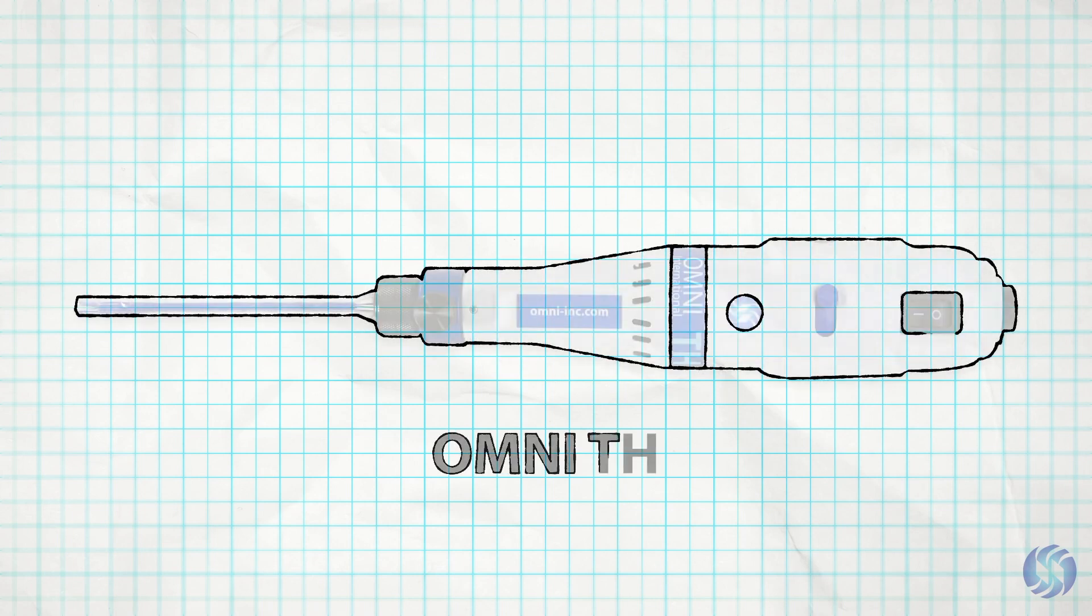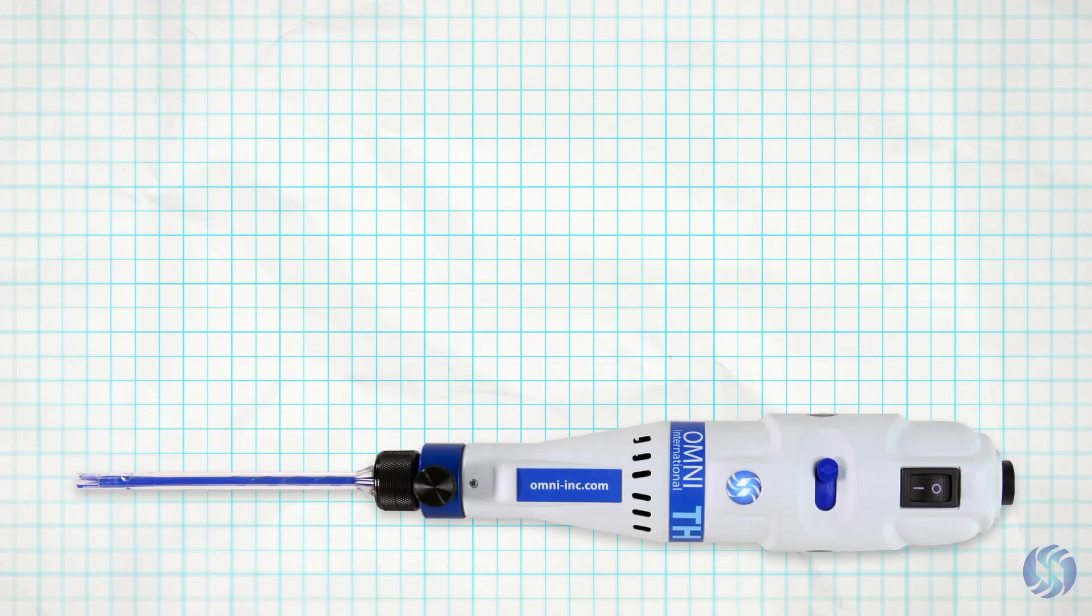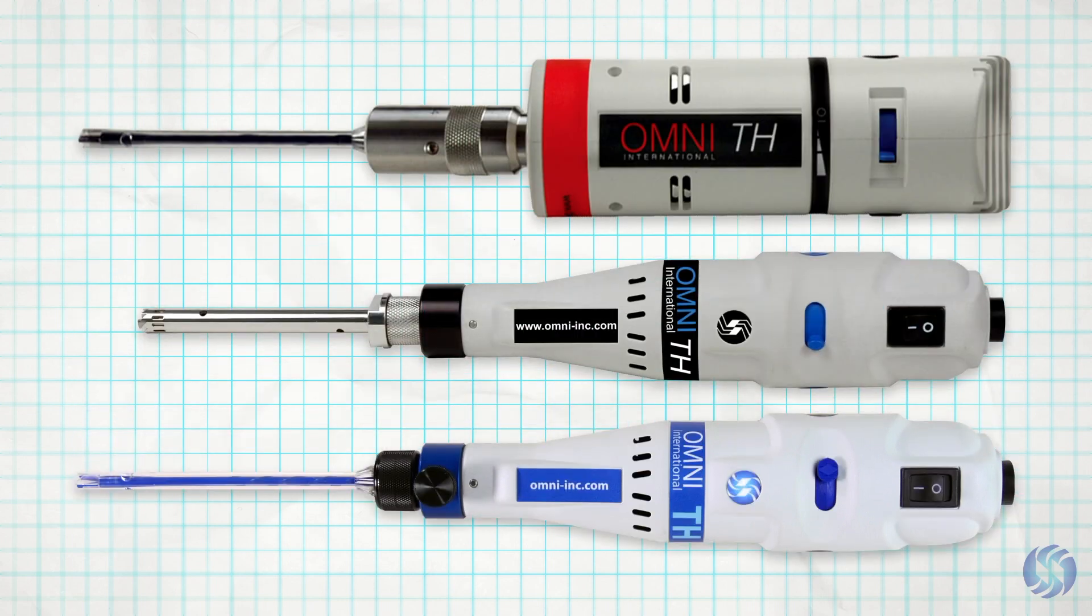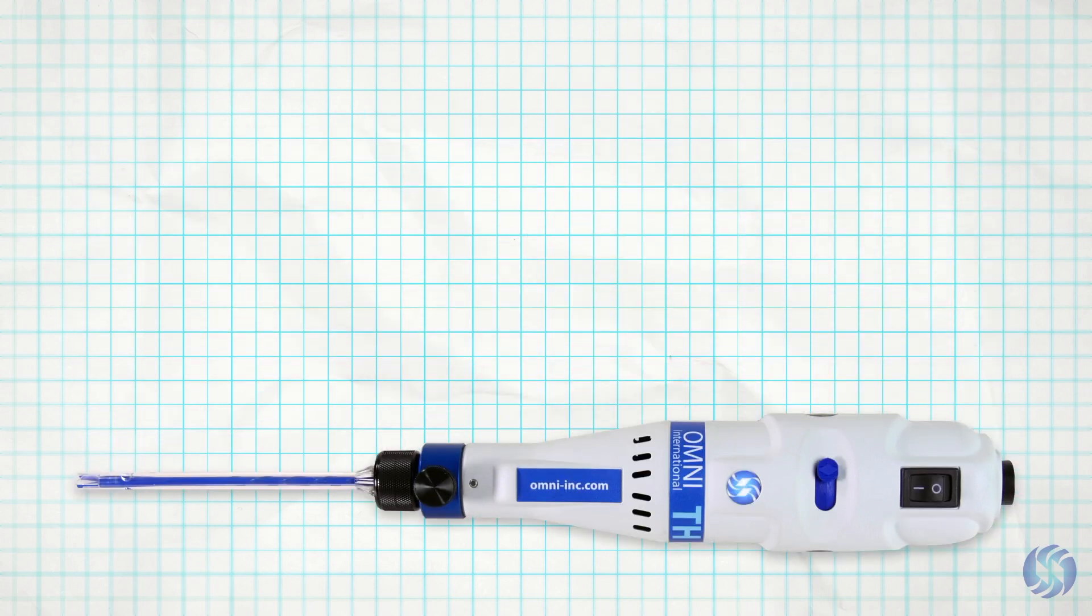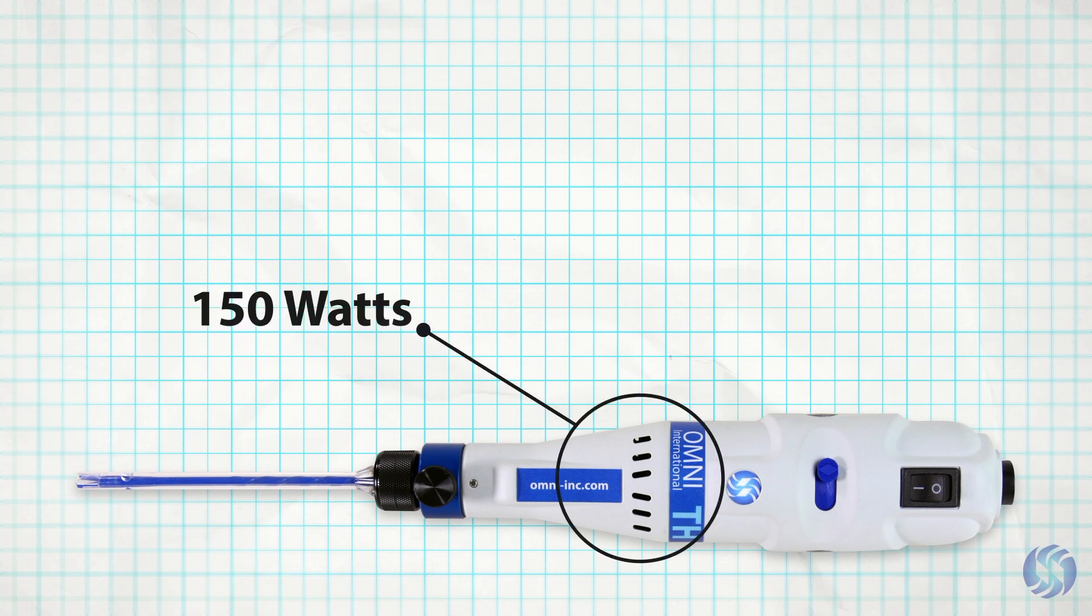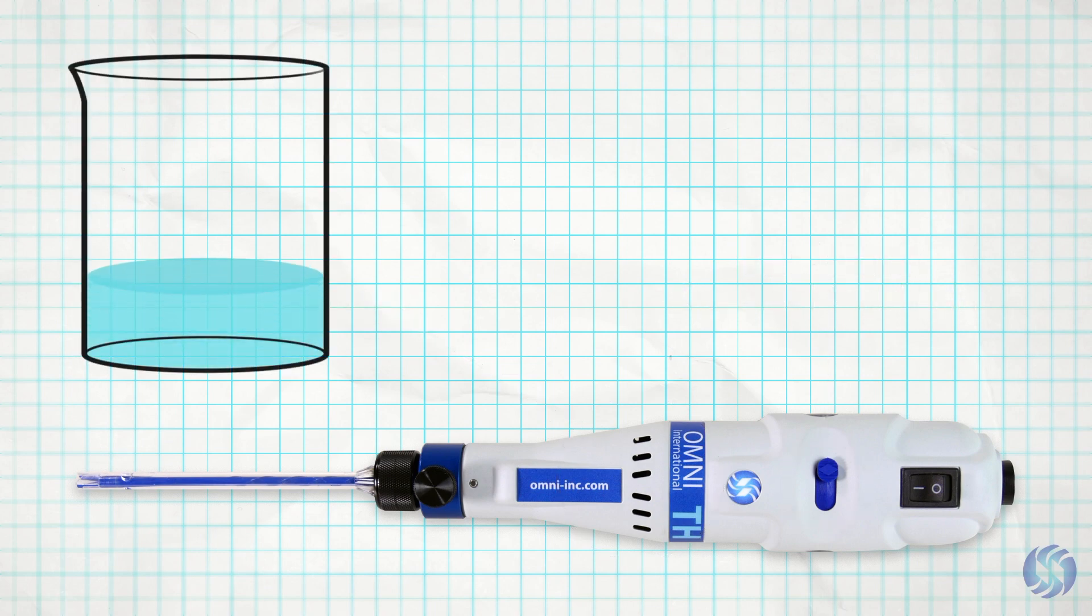The Omni TH, our most popular model, has a 20-year history of quality and reliability. The TH features 150 watts of processing power and a variable speed switch to reliably process virtually any sample up to 100 milliliters in volume.